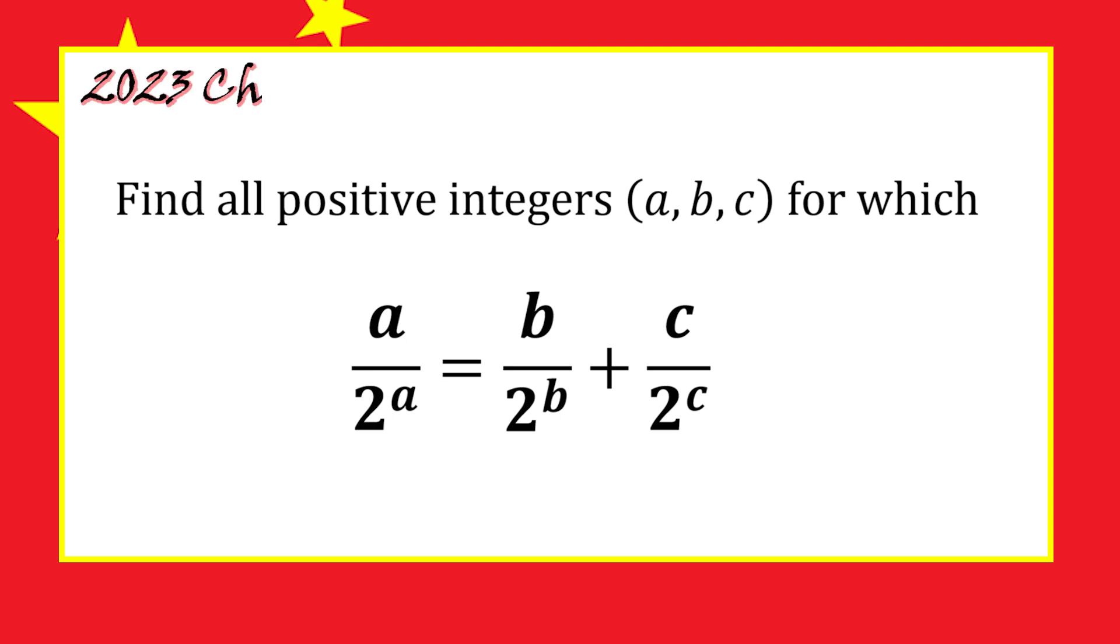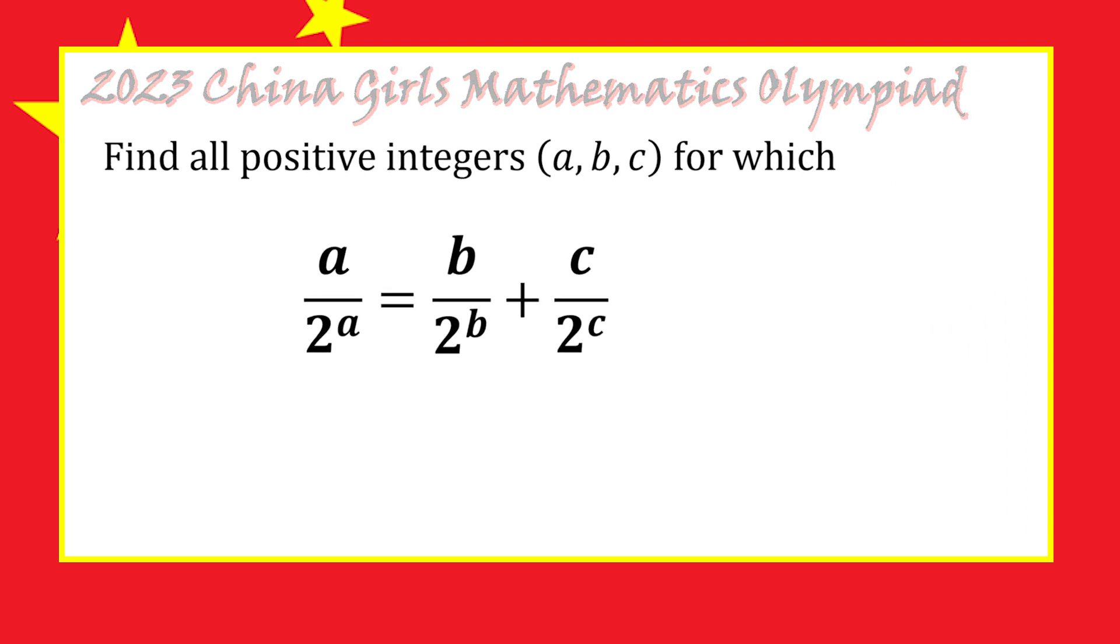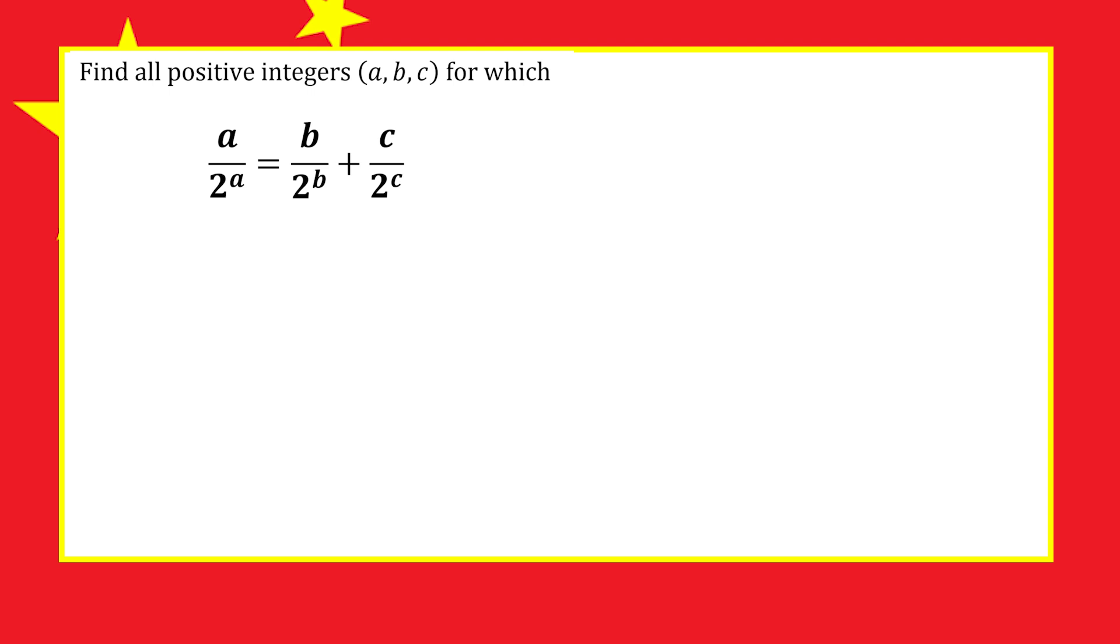This was problem 1 from the 2023 China Girls Mathematics Olympiad. To start solving this problem, I'll list out the values of a over 2 to the a for small values of a.